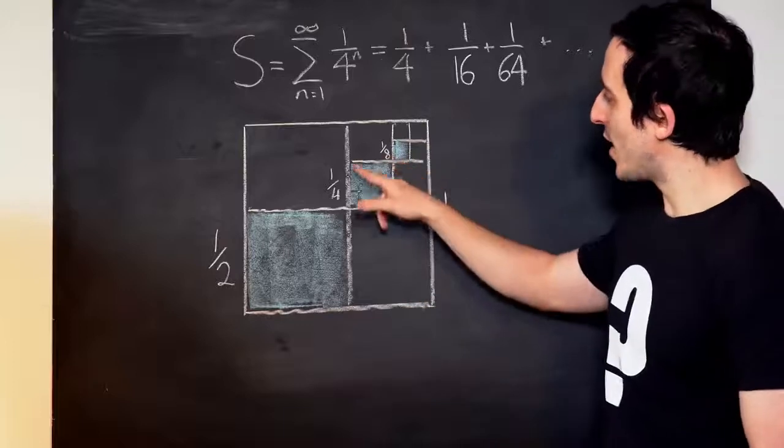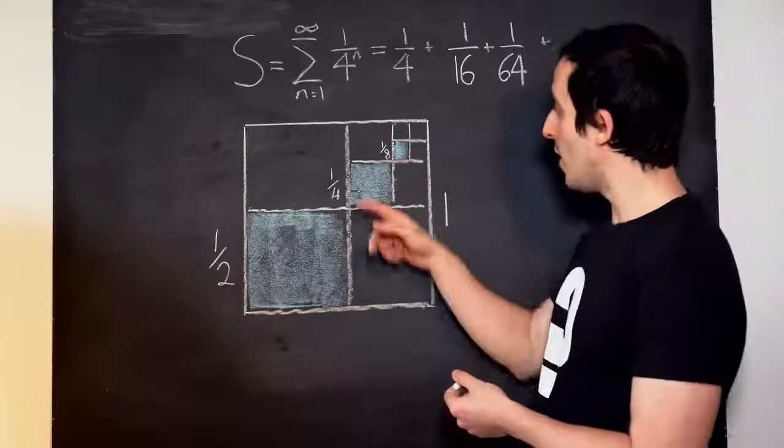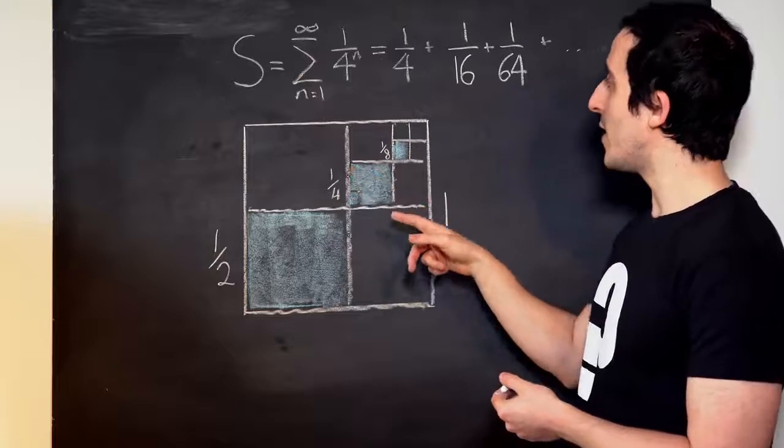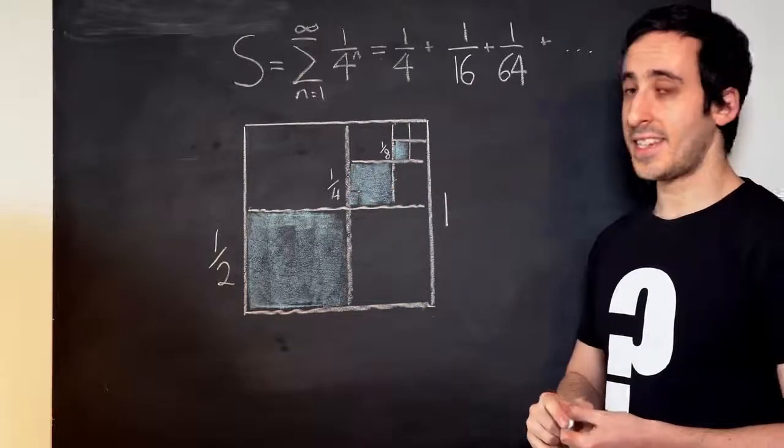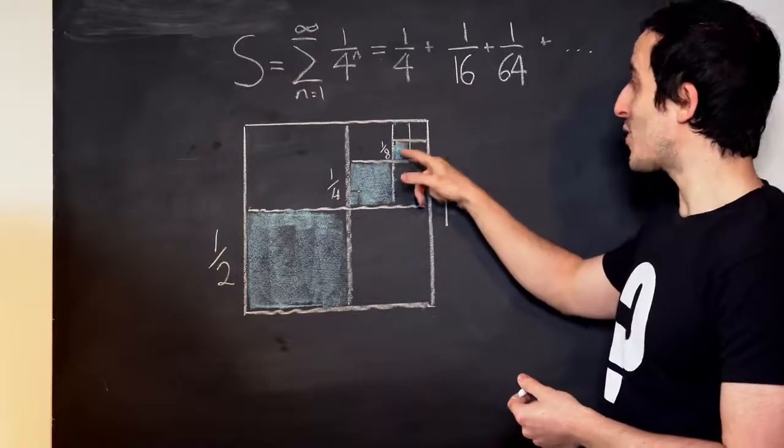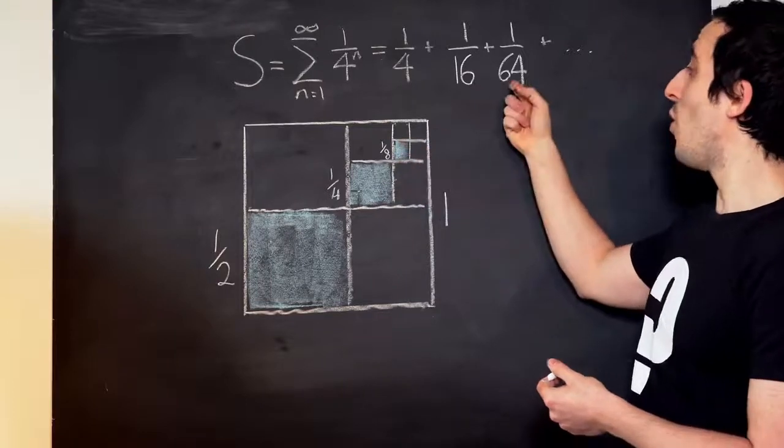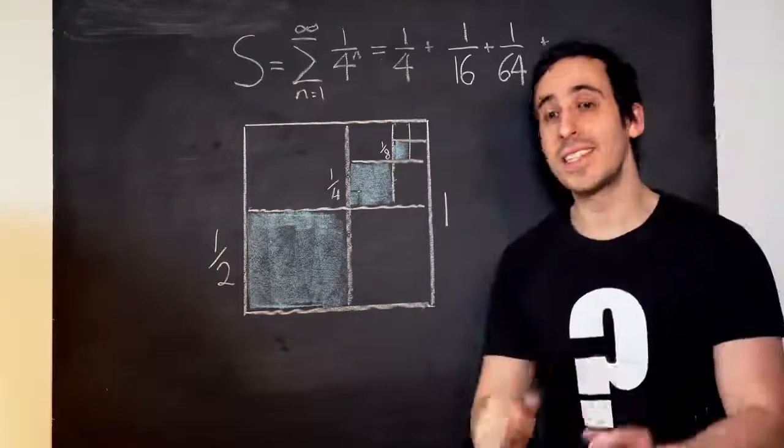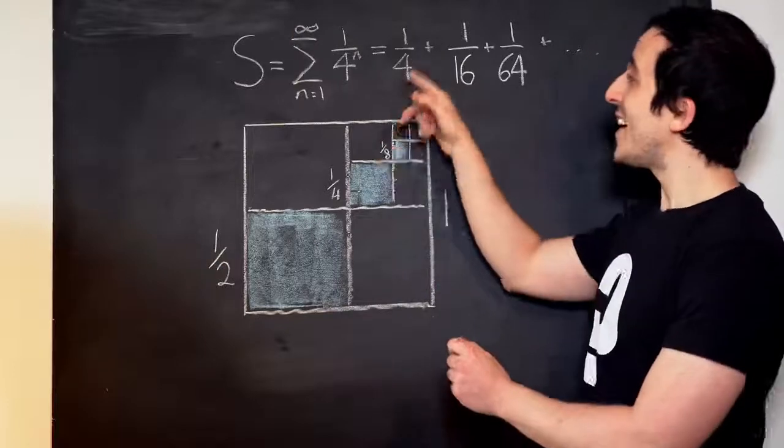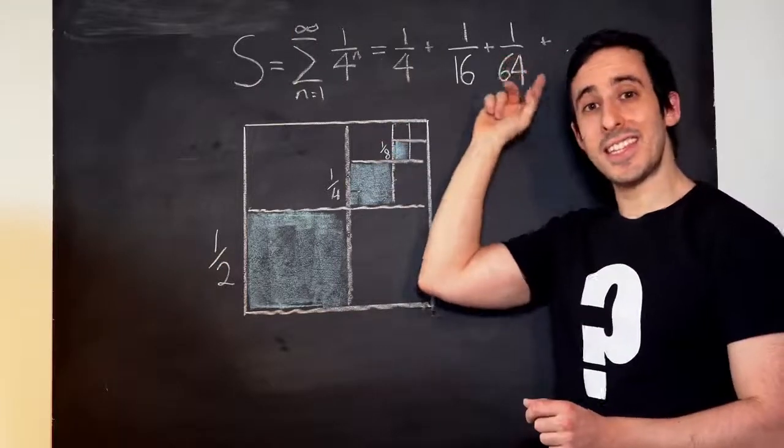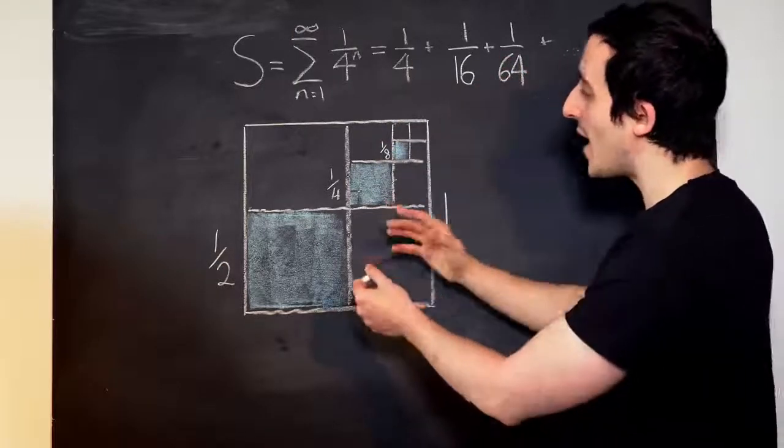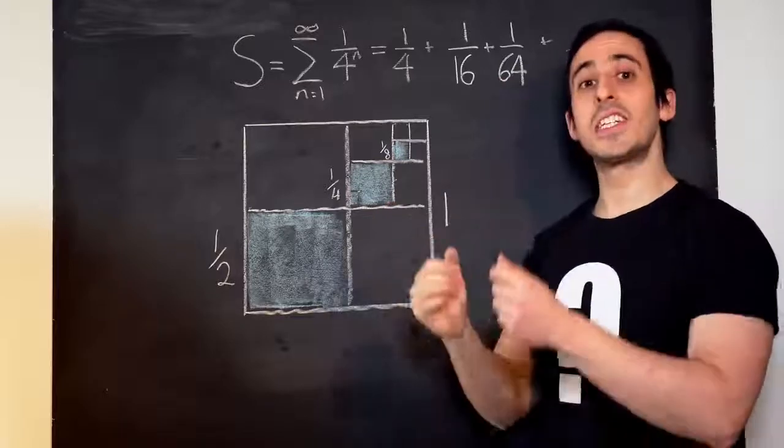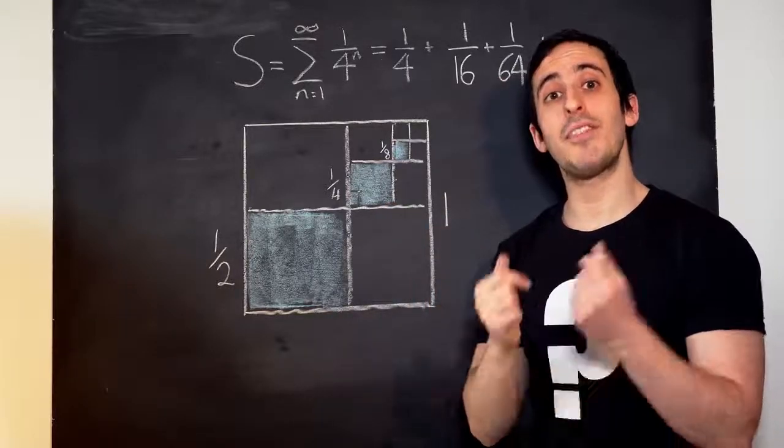And then if we go to this second blue square, what's the area of that? It's a quarter times a quarter, or one over sixteen. And then if we go to the next one, it's an eighth times an eighth, or one over sixty-four. And what we can see is that this process is exactly equivalent to this sum. Because each square, we are halving the side length, so we're reducing the area by a factor of a quarter.